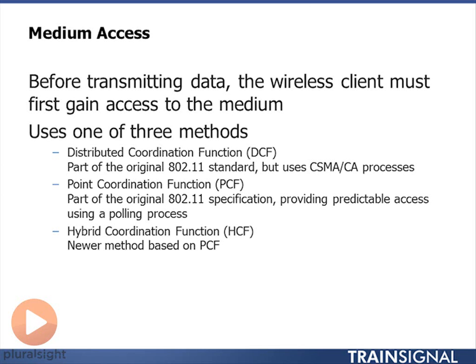The problem is that when you go into a contention-free period, it can vary in time. I cannot guarantee that every 100 milliseconds I'm going to go into a contention-free period, for example. So if I have a device I need to poll every 20 milliseconds, I can't actually do that in PCF because I can't control the delays. One of the enhancements made a few years back was to extend capabilities and include the Hybrid Coordination Function. This is based on the Point Coordination Function — it does polling — but it deals with the timing problems, and now I can poll a station during both the contention period and the contention-free period. So I don't have to wait for the contention-free period to be announced, and those timing issues are resolved.